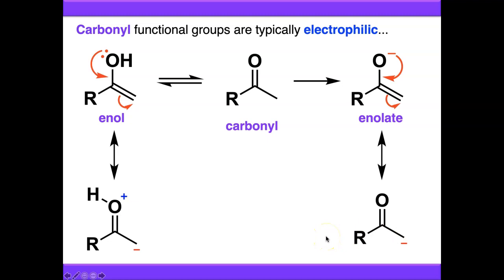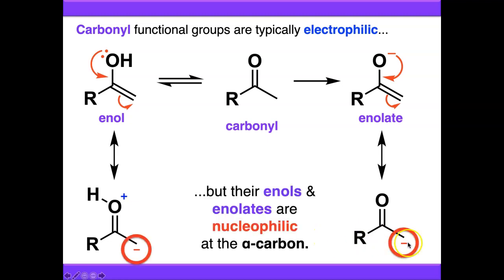What you'll notice about both of these compounds is that they are nucleophilic at the alpha carbon. They've got a formal negative charge, an anion, on the alpha carbon, which is the one adjacent to where the carbonyl was originally. So we've taken our carbonyl compound, which is electrophilic, and we've converted them into something which is now nucleophilic. We can do a range of different reactions with these enols and enolates.